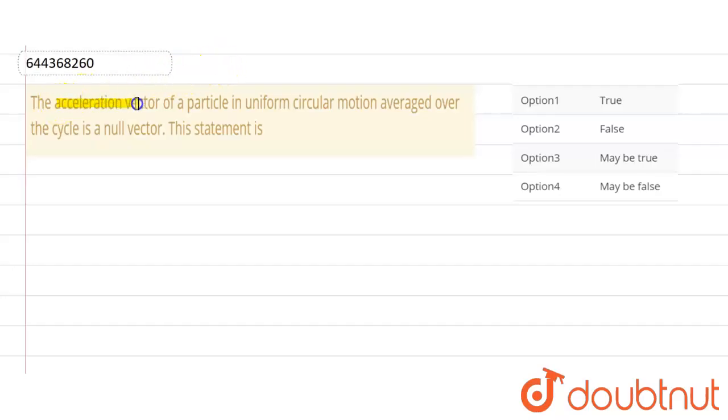So students, we have a question that the acceleration vector of a particle in uniform circular motion averaged over the cycle is a null vector. Okay, so we have to find that this statement is correct or false, or may be true or may be false.